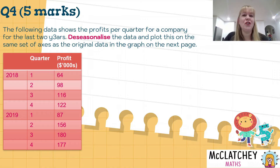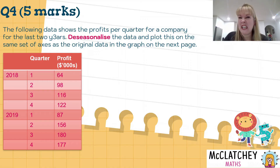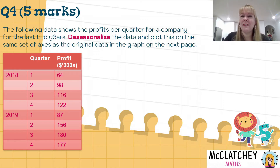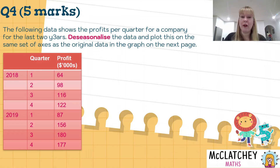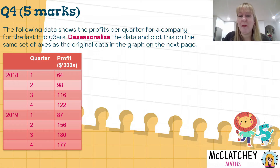De-seasonalising is not difficult, it's just tedious, and that's why it's on the complex paper. It's not complex because it's hard — it's complex because there are a lot of steps you need to remember. There are really only four of them, and if you can remember those four steps and apply them to each data point, you'll be fine.